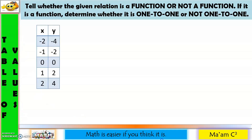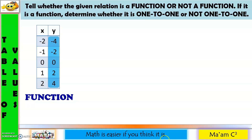Now, let us have table of values. X values are negative 2, negative 1, 0, 1, and 2. Since there is no x value that has been repeated, this means this is a function. Now, let us examine the y values: negative 4, negative 2, 0, 2, 4. There is no y value that has been repeated. Therefore, this is a function, and this is a one-to-one function.